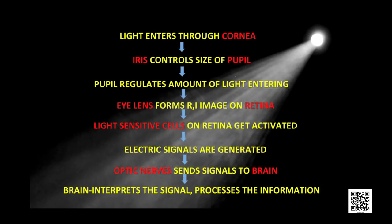Recap: Light enters through the cornea. Iris controls the size of the pupil. The pupil regulates the amount of light entering. The eye lens forms a real inverted image on the retina. Light-sensitive cells on the retina get activated and electrical signals are generated. Optic nerves send signals to the brain. The brain interprets the signals and processes the information.